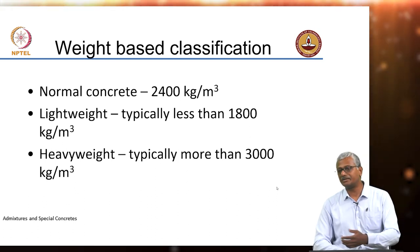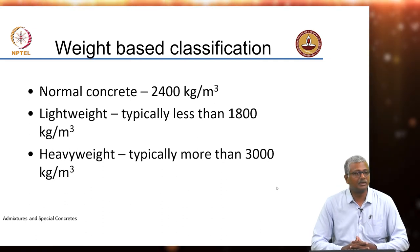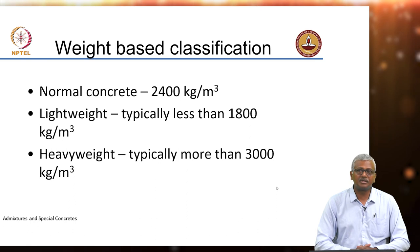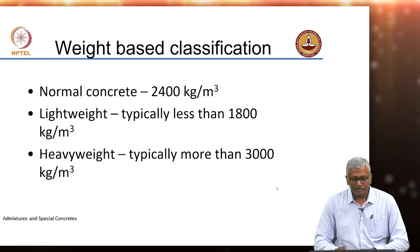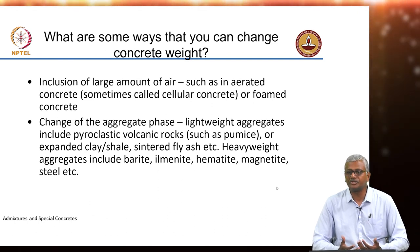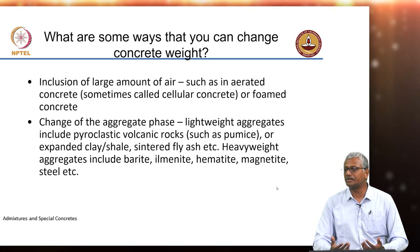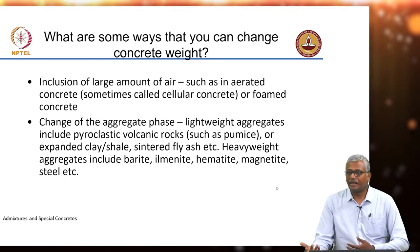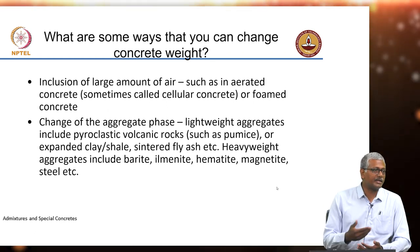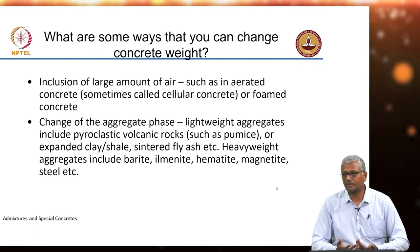Although technically anything more than 2500 to 2600 could be termed as heavyweight, in most instances heavyweight concrete is more than 3000 kilograms per cubic meter. Now, how do you make concrete change weight? The maximum proportion of material inside concrete belongs to aggregate, so making aggregates lightweight or heavyweight is the easiest way to change the density of concrete.